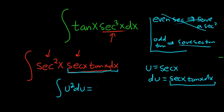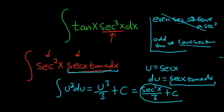Now you just use the power rule for integrals. So you add one, so you get u to the third over three plus our constant of integration c. And the last thing to do is replace your u with secant. So this is secant cubed x over three plus c. And that is the final answer.